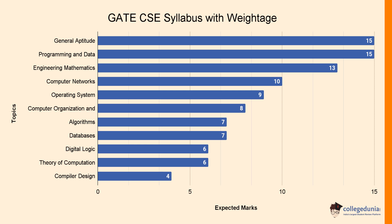As shown in the graph, you can expect questions of about 15 marks for Programming and Data Structures. For Computer Networks, you can expect questions of 10 marks. For Operating Systems, you can expect questions of 9 marks. All the topics are important — irrespective of the weightage, you must ensure to prepare for all the topics.